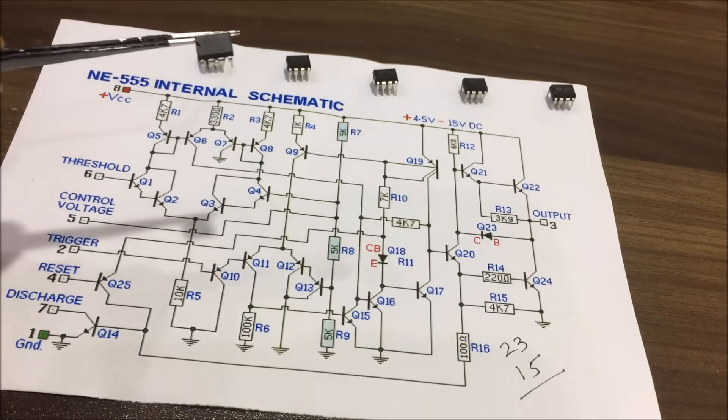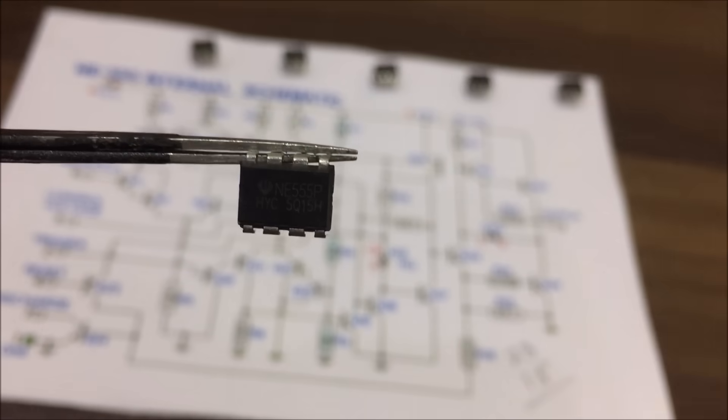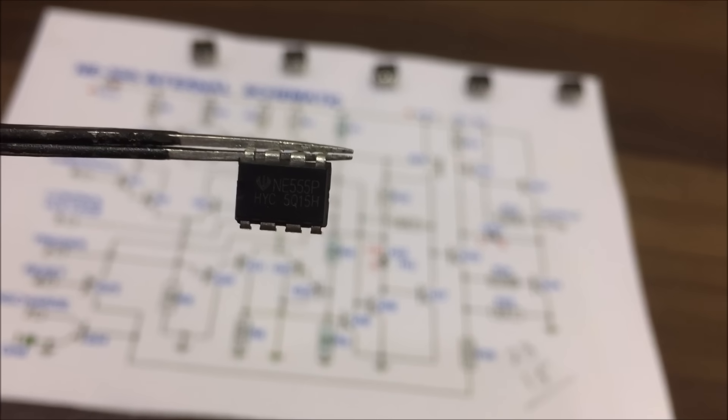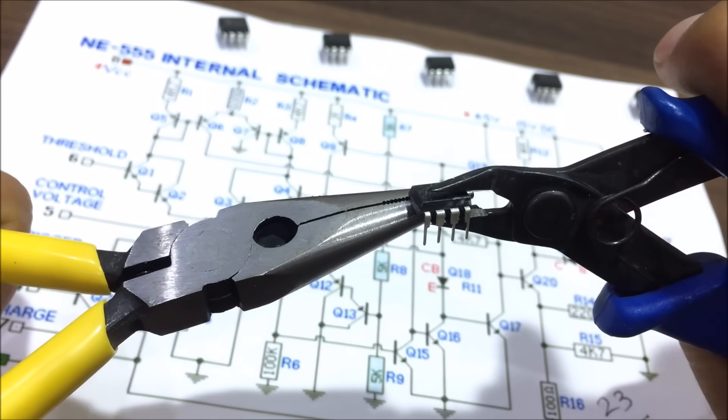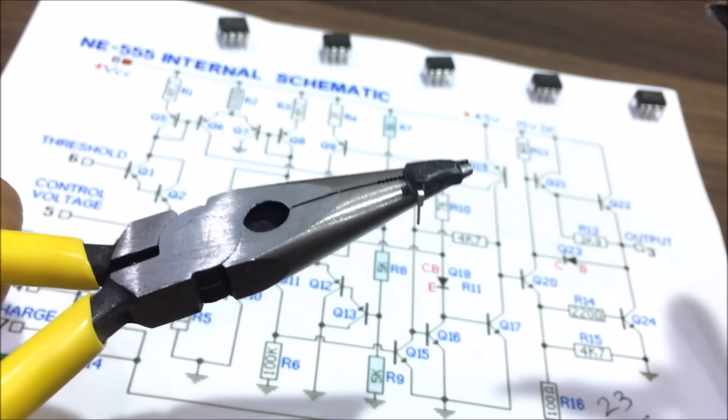You see how they manage to fix all these 23 transistors and 15 resistors in this small IC? Although if you are thinking you can break this IC and see all those components, they are formed onto a sheet of silicon in such a way that we cannot see with our naked eye.